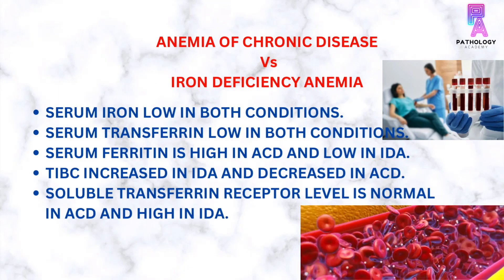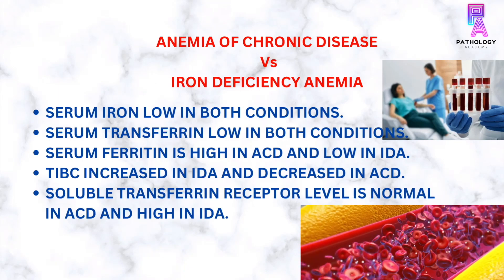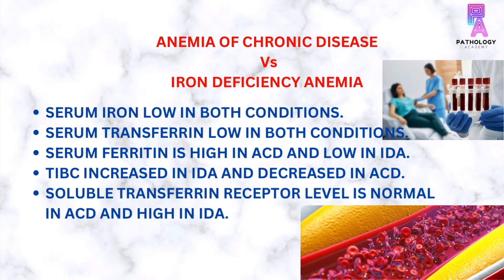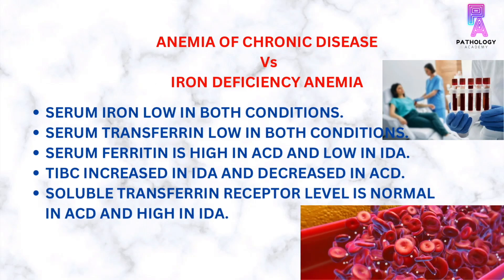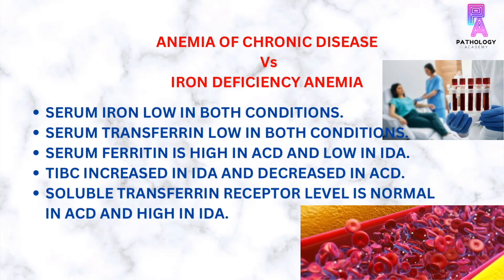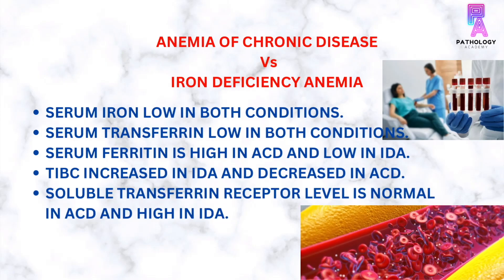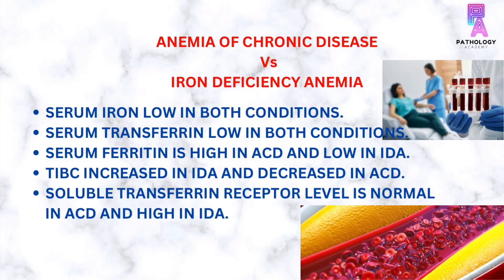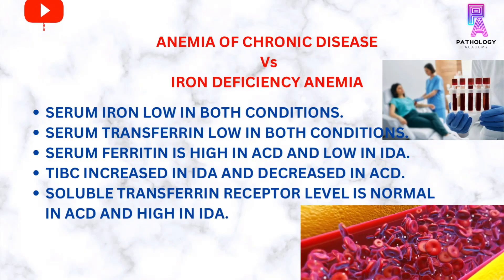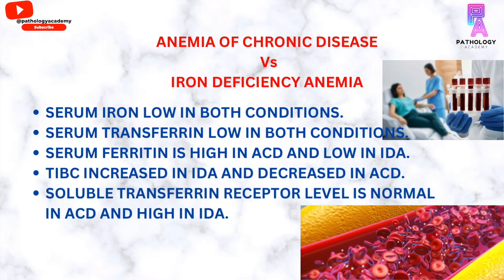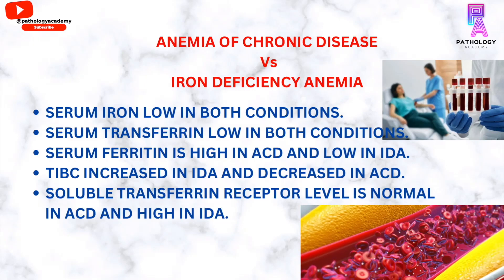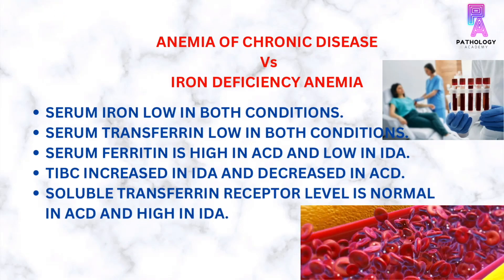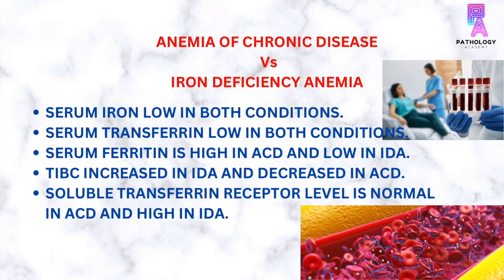Sometimes it is very difficult to differentiate anemia of chronic disease from anemia due to iron deficiency, because both can present with a similar blood picture. So there are some points which can differentiate these two. In anemia of chronic disease, there is an underlying disease, whereas in anemia due to iron deficiency, there is an actual deficiency of iron causing anemia. Iron studies are required to differentiate between these two conditions.